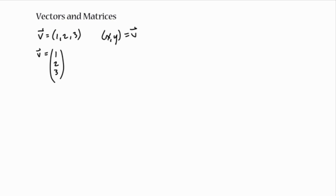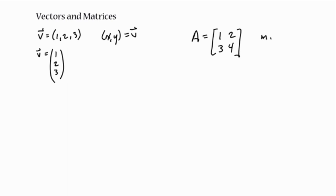A matrix is just a bunch of numbers arranged in a rectangular grid — sometimes a multidimensional grid, but we'll just go with a two-dimensional matrix. Usually denoted by a capital letter, so A is my matrix. It's got two rows, it's got two columns. We always say that a matrix has m rows and n columns, and we talk about m by n matrices quite often.